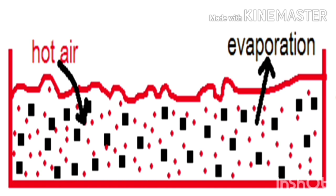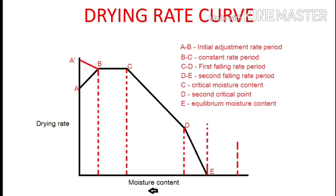The data for free moisture content is plotted on the x-axis and drying rate is plotted on the y-axis. We get a curve which is known as the drying rate curve.